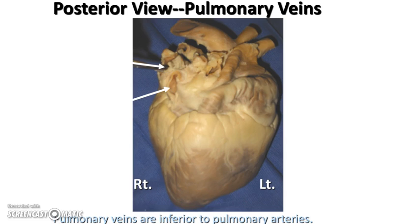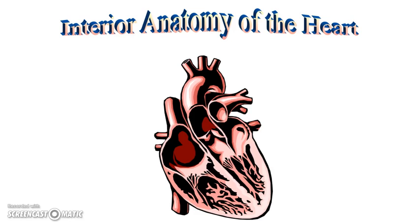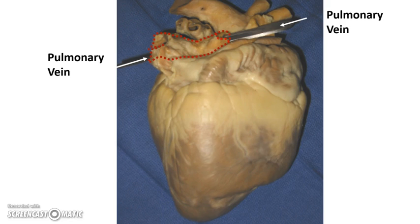Once in the lungs, carbon dioxide leaves the blood and oxygen enters. The blood then returns through the pulmonary veins and empties into the left atrium of the heart. Here's another view of the pulmonary veins — notice the silver probe sticking through them in this picture. You should be able to run your fingers through and feel throughout.